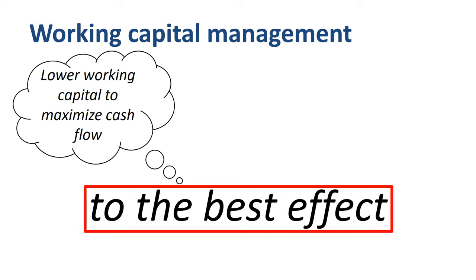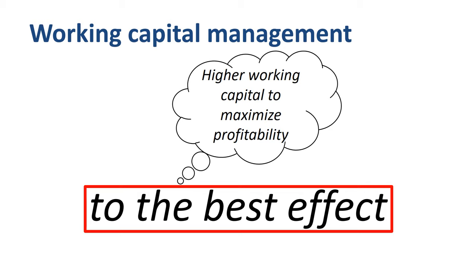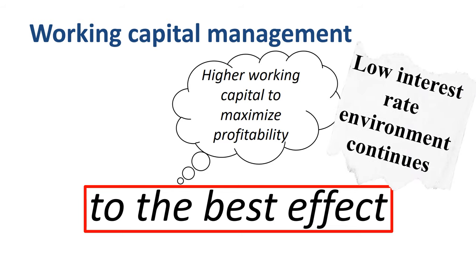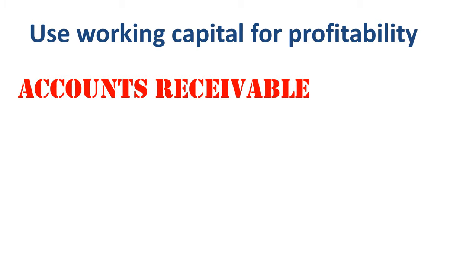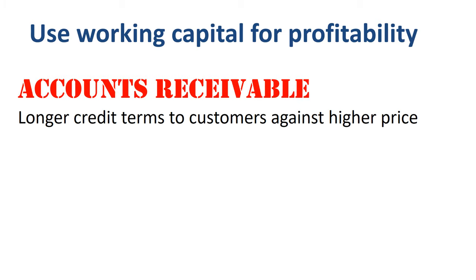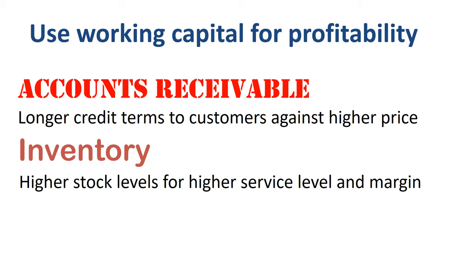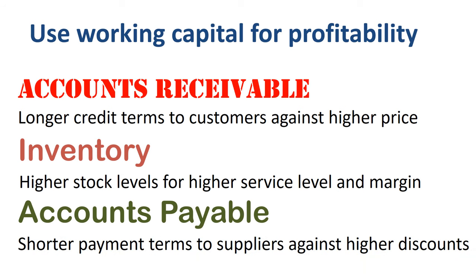You could also take working capital in a completely different direction. Rather than lowering working capital to maximize cash flow, you could aim for a higher working capital in return for more profitability. This second working capital strategy is an option for companies that have sufficient cash and want to benefit from a low interest rate environment. On the accounts receivable side, you could offer customers longer credit terms in exchange for higher selling prices. On the inventory side, you could hold higher stock levels to improve availability and use that higher service level to improve margins. On the accounts payable side, you could offer shorter payment terms to suppliers in return for higher discounts. All of these would hurt cash flow in the short term, but benefit profitability.